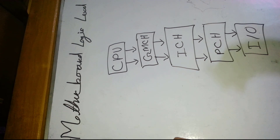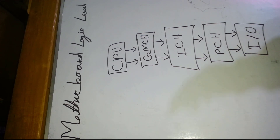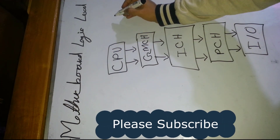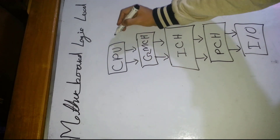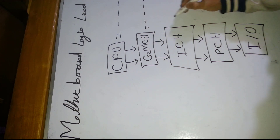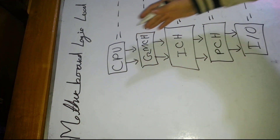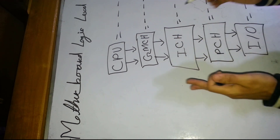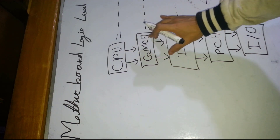IO - Input Output Controller. This chart will be shown section by section. PCH stands for Platform Controller Hub, and IO stands for Input Output Controller. Now we are adding concepts and will cover this logic level section by section.